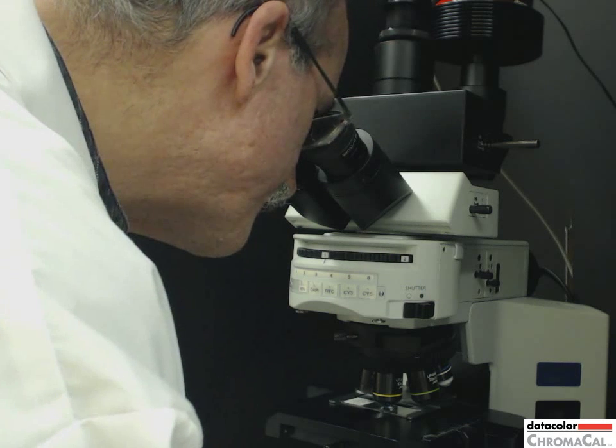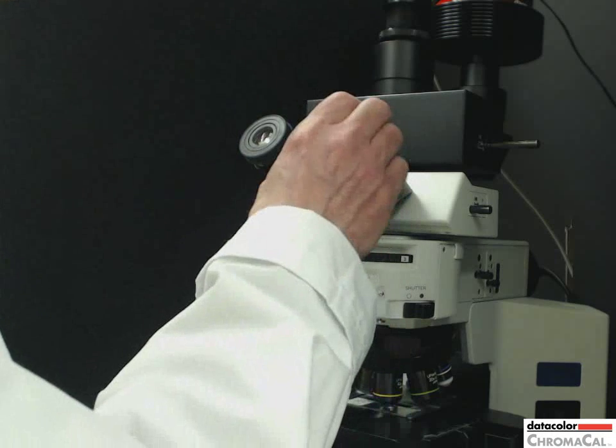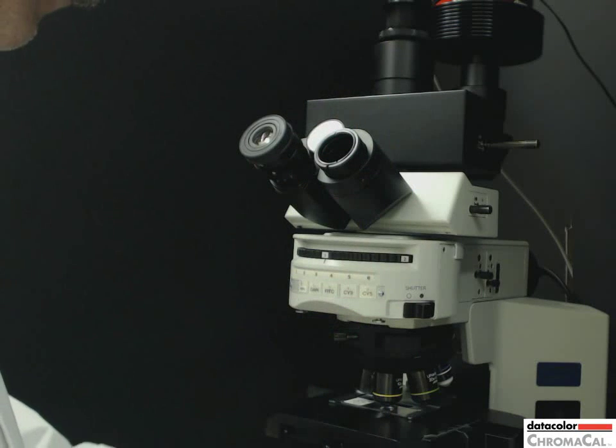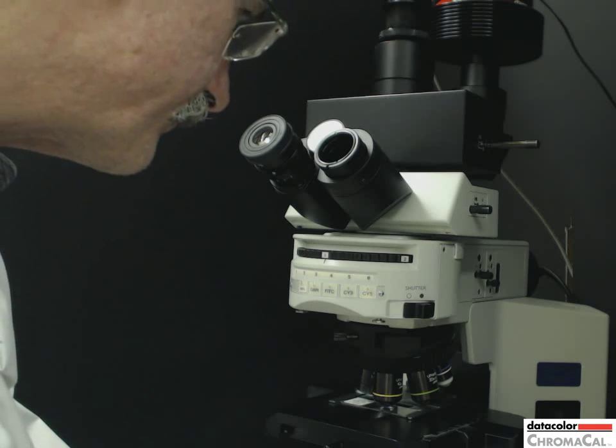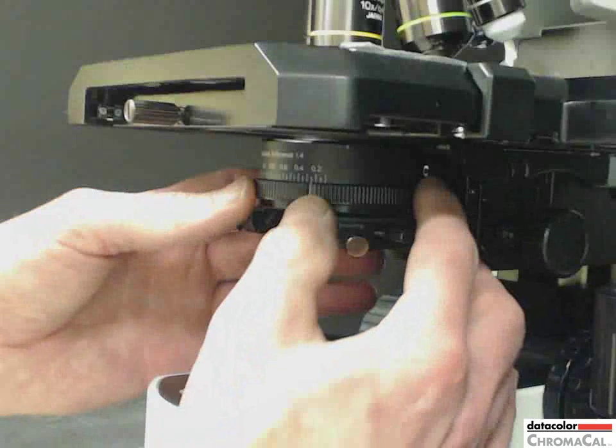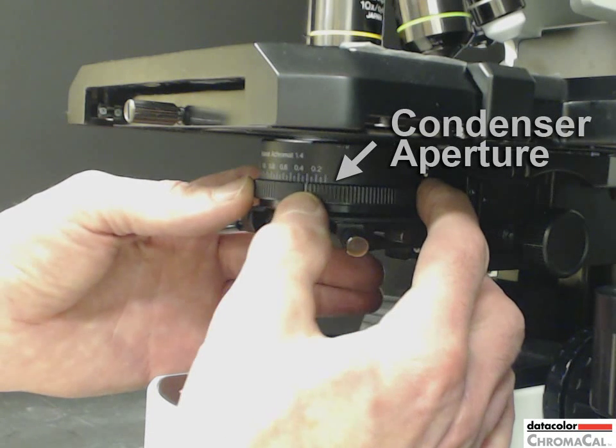Finally, remove the eyepiece from the microscope and look through it like you're looking at a television screen. Turn the condenser aperture dial or use a lever to open and close the aperture.